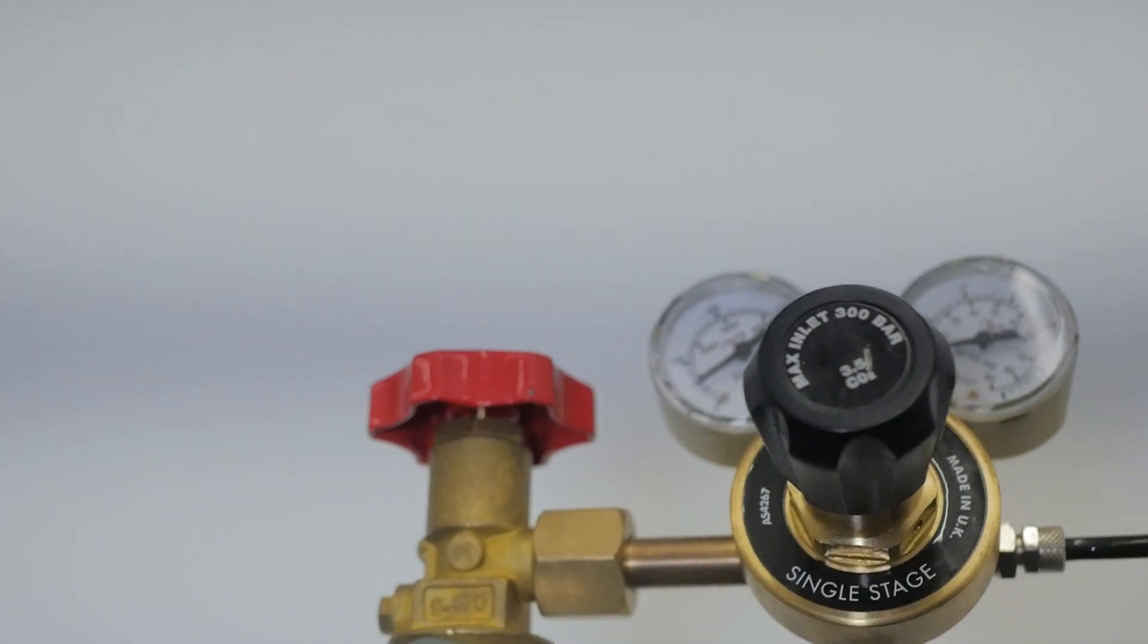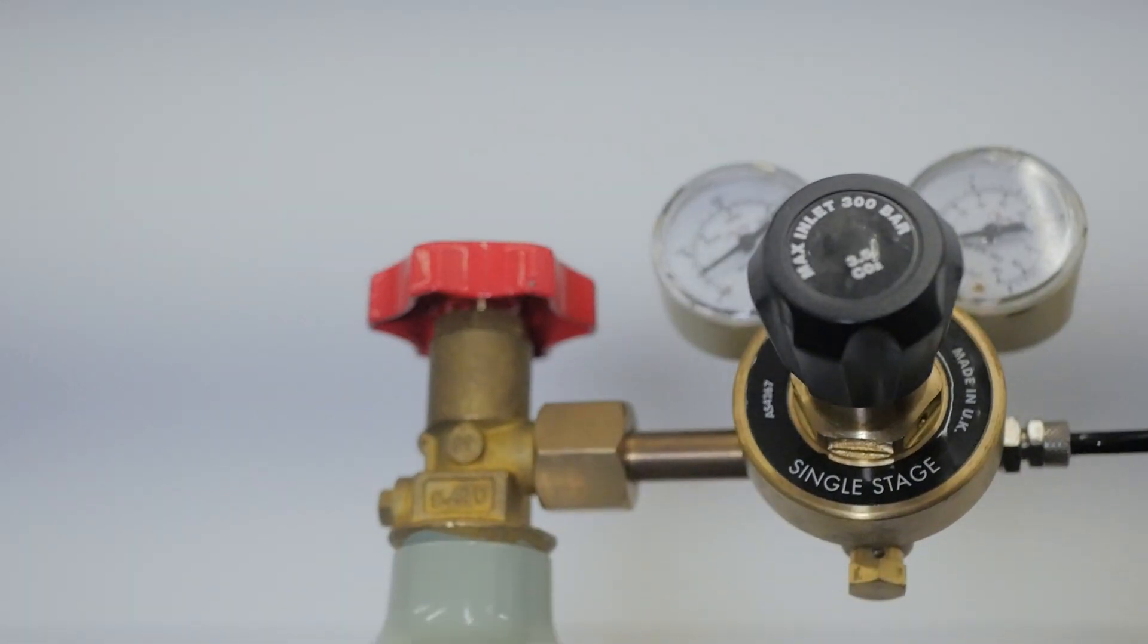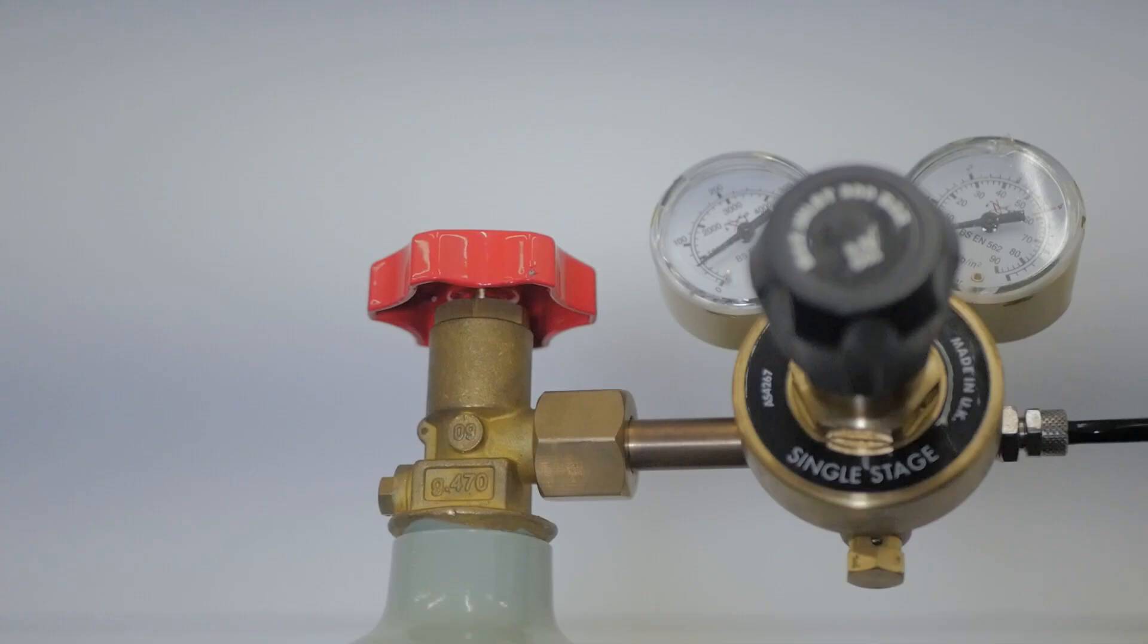Fully open the valve at the top of the gas bottle, turn anti-clockwise, and use the pressure adjustment control to set the output gas pressure to 1-1.3 bar.